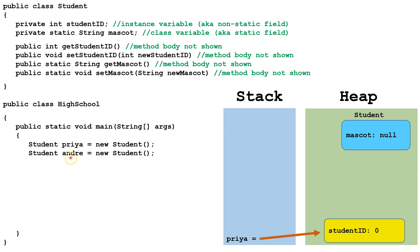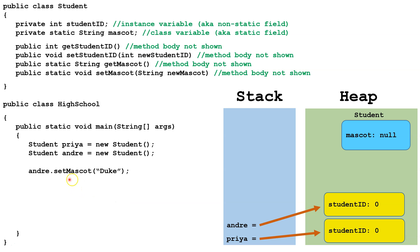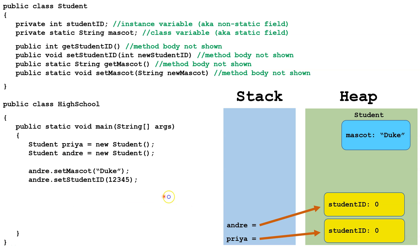Next, we declare a new Student variable Andre and have it point at a new instance of the Student class. So we've added a new instance with its own copy of the instance variable studentID. Then we call the setMascot method from the Andre instance variable. Now setMascot is a static method, so we could call it from Andre, from Priya, or from the class itself — Student. We change the value of the mascot field to Duke. Next, we call Andre.setStudentId — since setStudentId is a non-static method, we have to call it from an instance, so we set the student ID of the object Andre is pointing at to 12345.